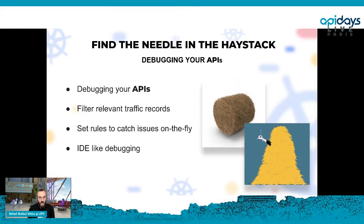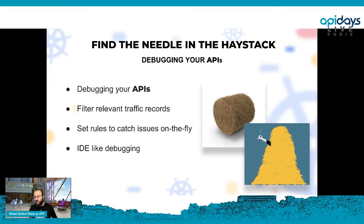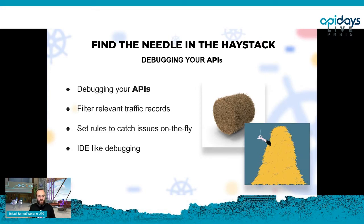Traffic is the new king with regard to visibility. If you can understand how your microservices communicate across multiple protocols — synchronous or asynchronous, local or remote — you get full visibility into what your application is doing. It's easy to go back and debug, check code validation, verify schema changes. This brings us to debugging: finding the needle in the haystack. I'm going to show you the magnet for that — it's called Mizu, an open source tool.